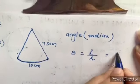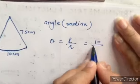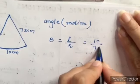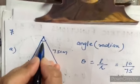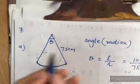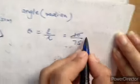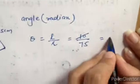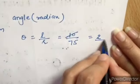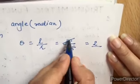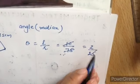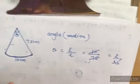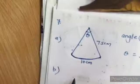L is 10 and R is 75. The theta is in radians. Calculating 10/75, we simplify and get 2/15 radians.